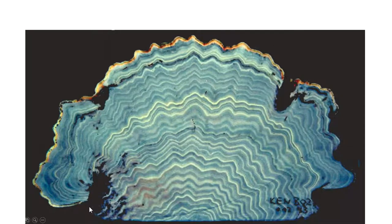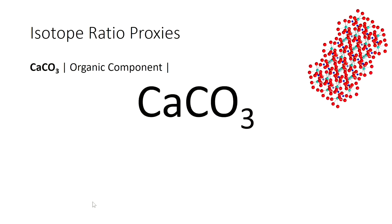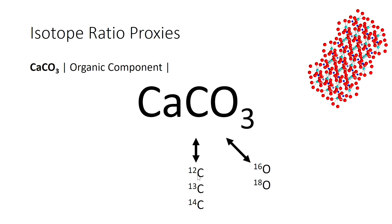We've covered coral calcification, how the skeleton is formed, and went over a little bit of the chemistry. The calcium skeleton is the mineral aragonite, which is made up of calcium, carbon and oxygen — calcium carbonate — and the oxygen atoms can be different isotopes of oxygen. We'll also look at how carbon atoms can be different and how we can use those as proxies, and in a subsequent video we'll look at other elements that can substitute in for calcium.